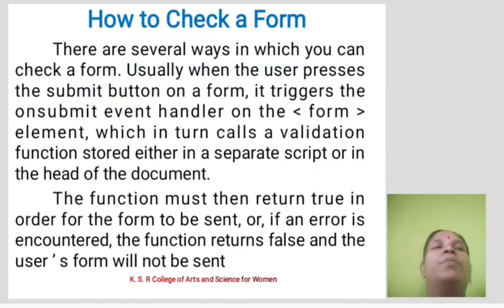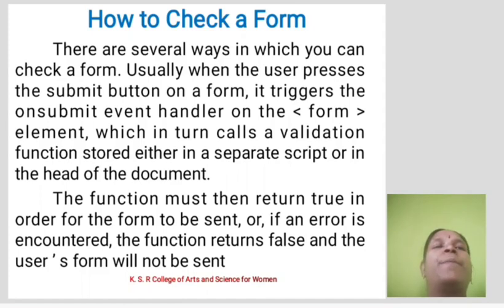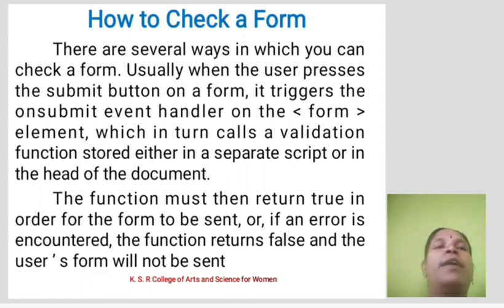How to check a form. There are several ways in which you can check the form. Usually, when the user presses the submit button on a form, it triggers the onsubmit event handler on the form element, which calls a validation function stored either in a separate script or in the head of the document. The function must then return true in order for the form to be sent, or if an error is encountered, return false so that the user's form will not be sent.